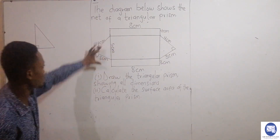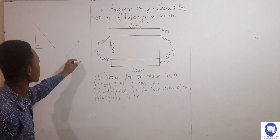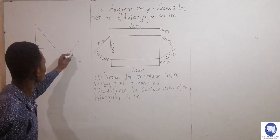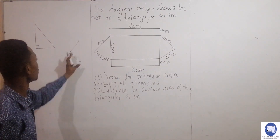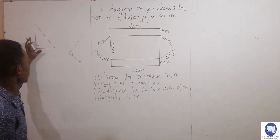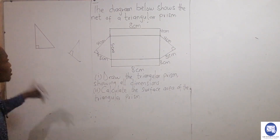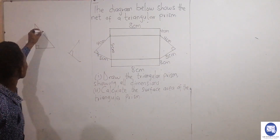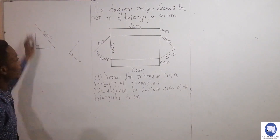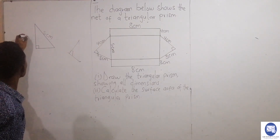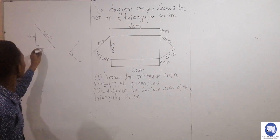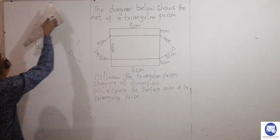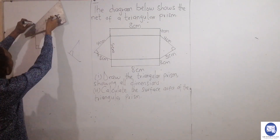I'm turning this side so it looks something like this. I can turn it to make it straight, to stand well, and then it will look something like this. So the longest side is five centimeters, our height is four centimeters, and our base is three centimeters. Now I'm not done, so I'll still continue.